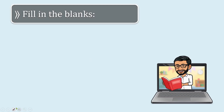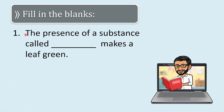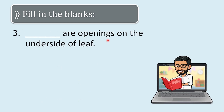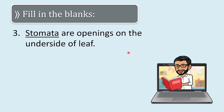Now fill in the blanks. First question: the presence of a substance called dash makes a leaf green. The answer is chlorophyll. Second question: the process by which food is prepared in plants is called dash. The answer is photosynthesis — photosynthesis is the process by which food is prepared in plants.